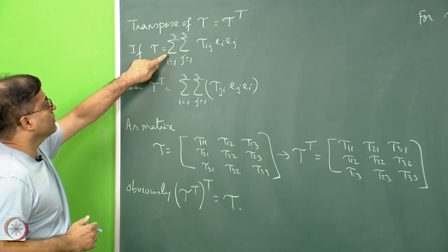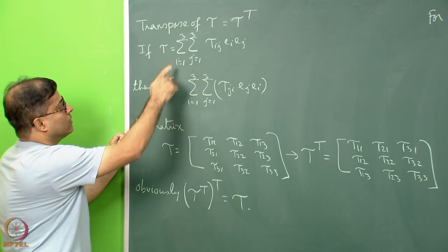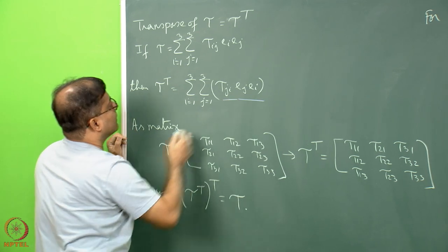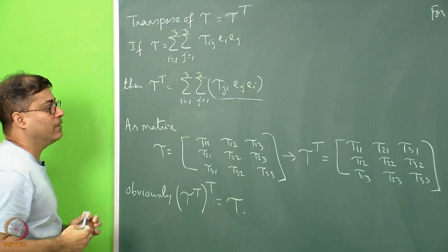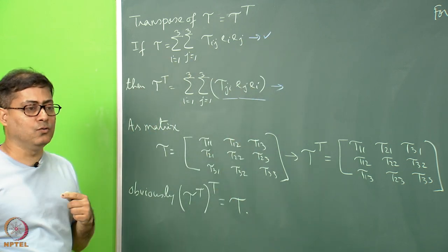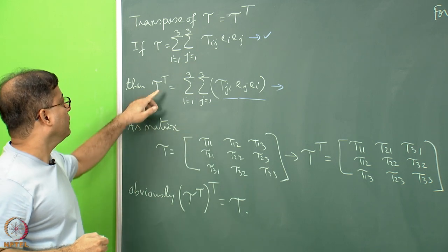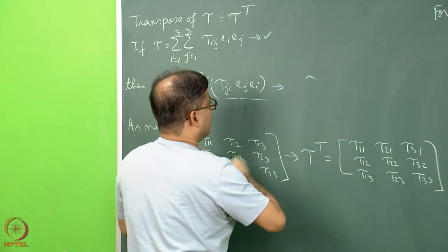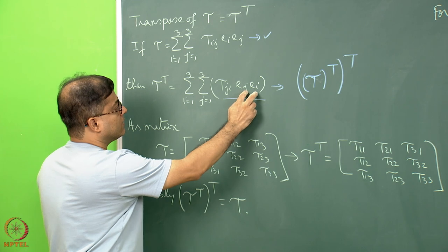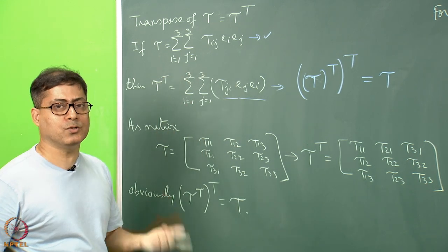If tau equals the double summation over i and j from 1 to 3 of tau_ij e_i e_j, then the transpose tau^T is given by the double summation of tau_ji e_j e_i — that is, i and j mutually replace their positions. I strongly request students to stop here, expand this, and verify the expansion. From these two expressions, applying the transpose twice — tau^T transposed again — i and j interchange positions once more, returning to tau. This is consistent with what you already know: re-transposing a matrix returns to the original.